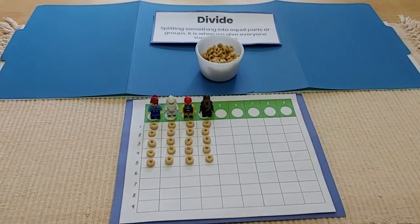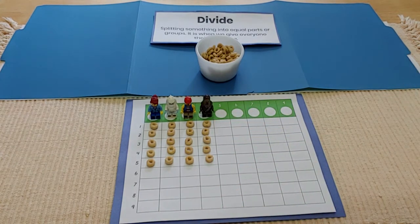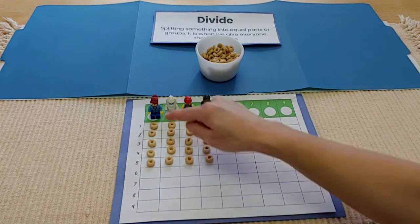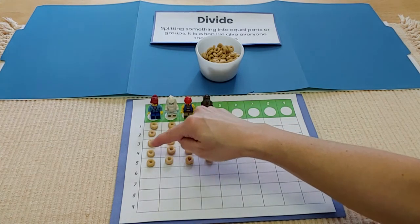Look at that. I was able to share my 20 Cheerios equally among all my friends. Each one of my friends here got five Cheerios. One, two, three, four, five.